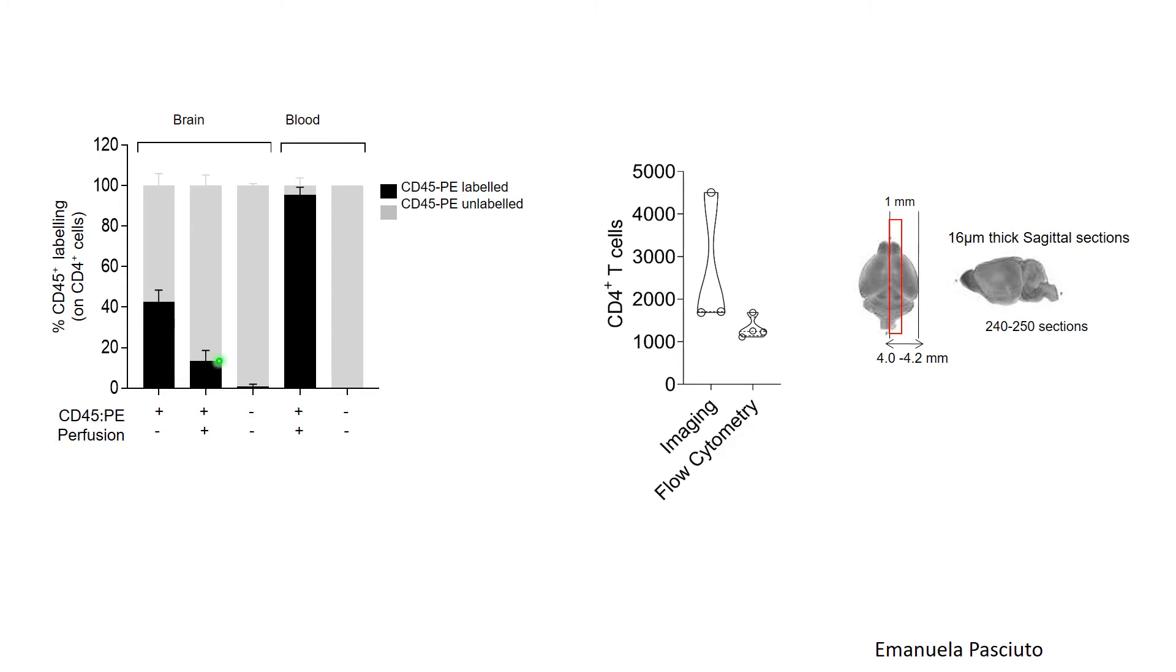If we couple this with perfusion of the mouse brain, we can see that most of the T-cells in the mouse brain are clearly inside the tissue and not inside the blood. This is in contrast to cells inside the blood, which all get labeled with the CD45PE that we inject at the point of death.